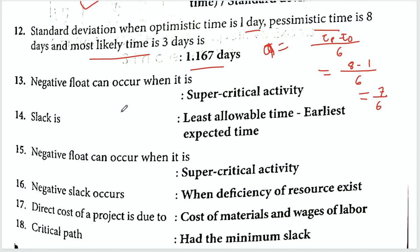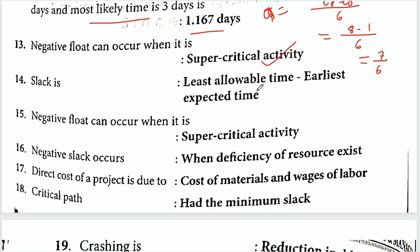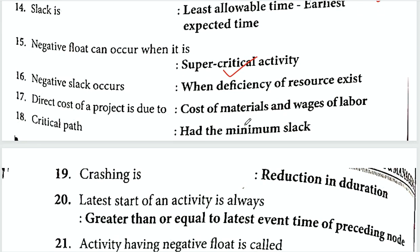Negative float can occur when there is a supercritical activity. Slack = latest expected time minus earliest expected time. When slack is negative, this is called a supercritical activity. Negative slack occurs when there is a deficiency of resources.